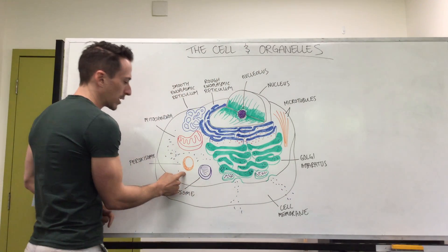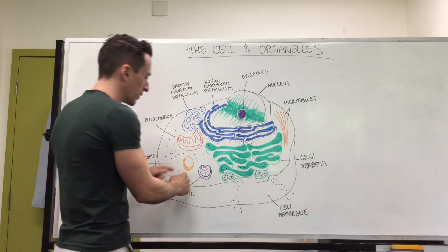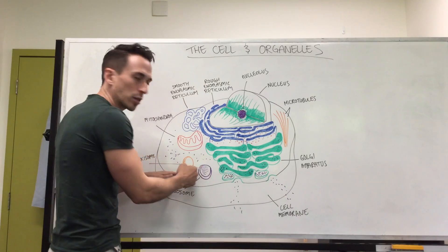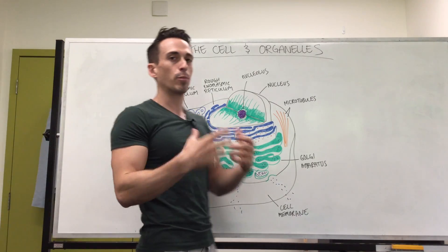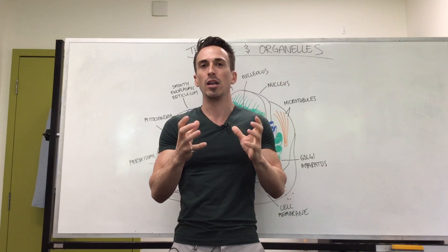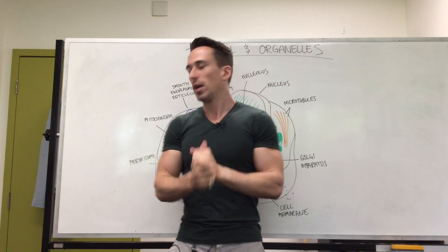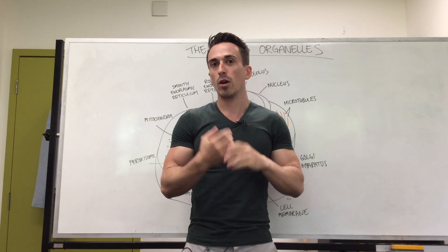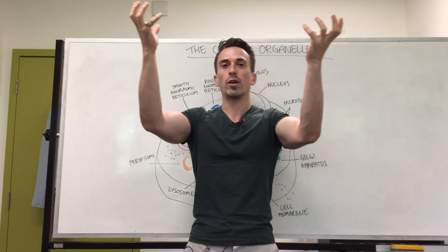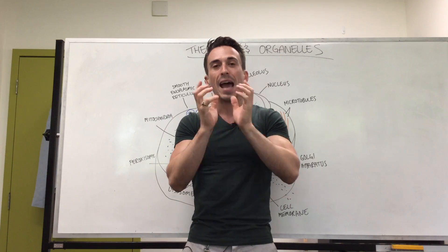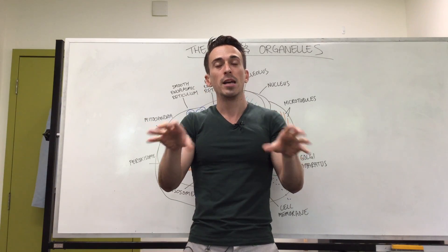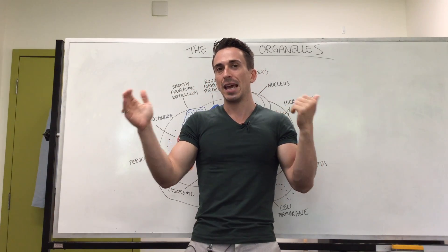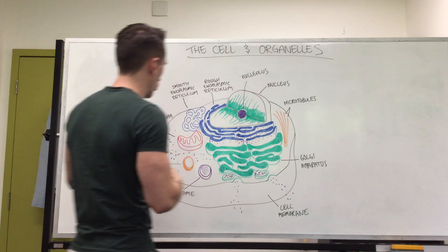Another subcellular structure is the peroxisome, which is very similar to a lysosome in that it breaks things apart, but it didn't come from the Golgi apparatus. What the peroxisome does is break things apart using oxygen — it oxidizes substances. It can take oxygen and hydrogen and create hydrogen peroxide, using that to split things apart. Specifically, it splits apart fats — long-chain fatty acids — using hydrogen peroxide.